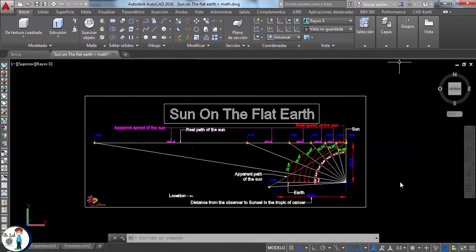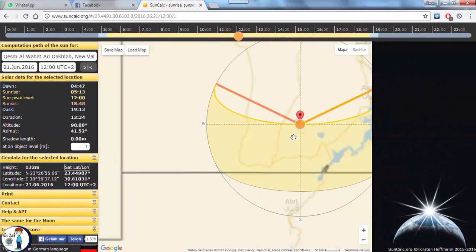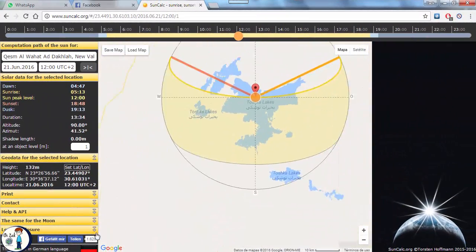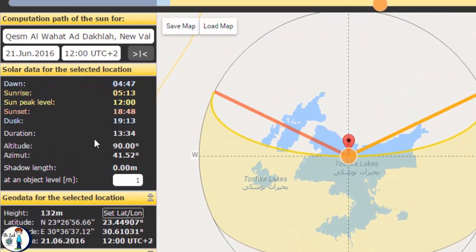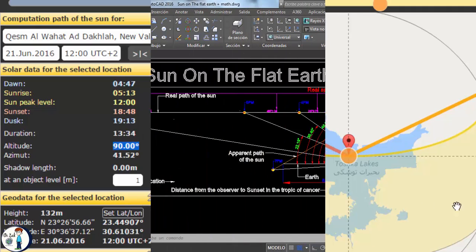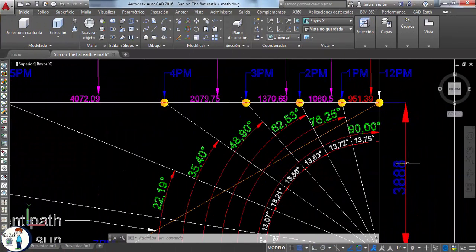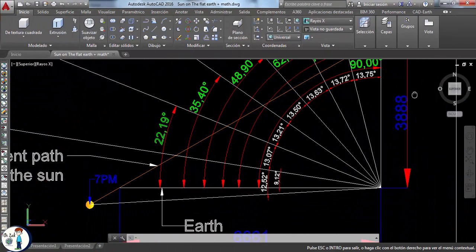This is a diagram I made in AutoCAD with the real elevation angles of the sun that we get from suncalc.org. This is the location and dates that I used. You can try that yourself. So when we draw the angles accurately, we notice that the sun travels faster the more it moves away from the observer.